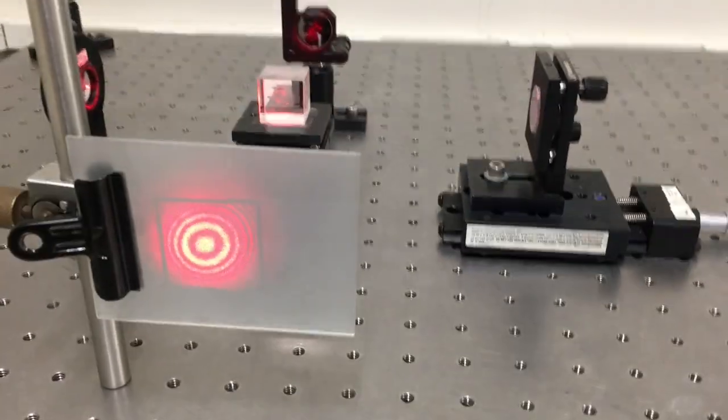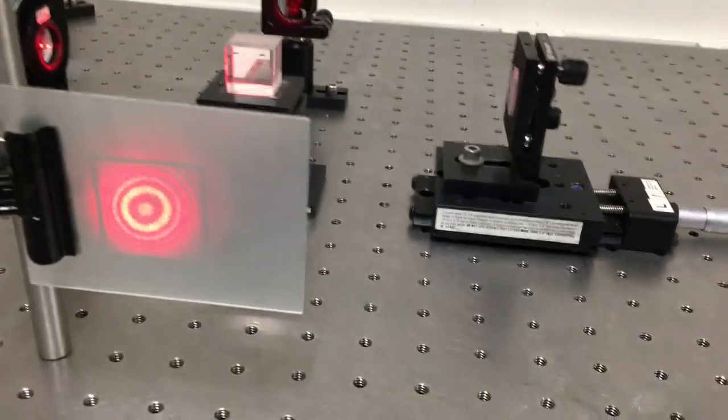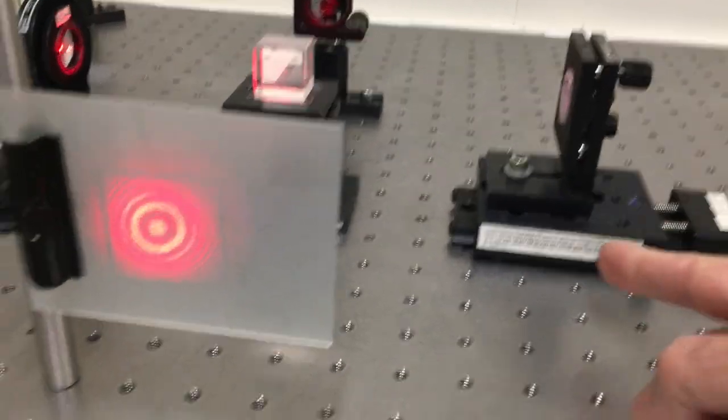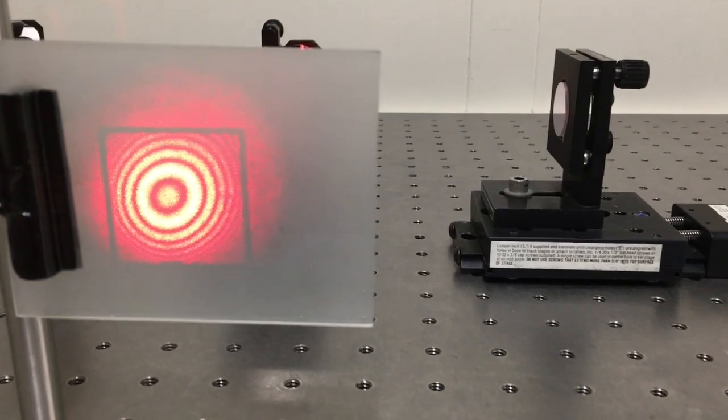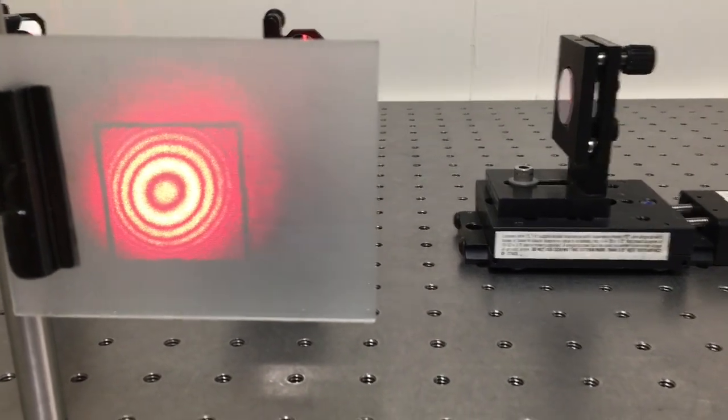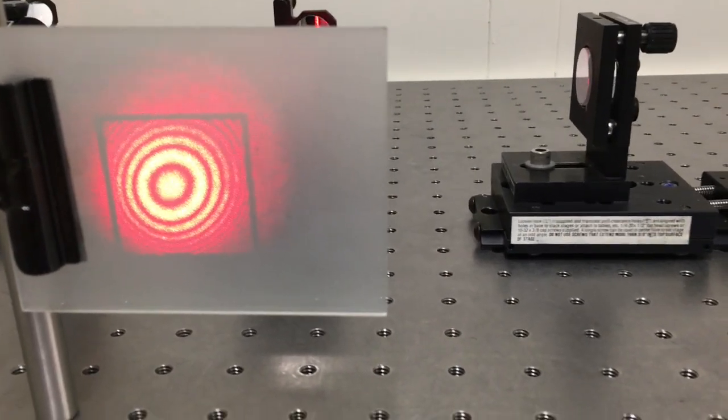So let's look at the interference pattern and see what happens when we translate this mirror around a little bit. First, we see the interference pattern, our bullseye pattern. You might think, why rings? Why does it look like a bullseye pattern?